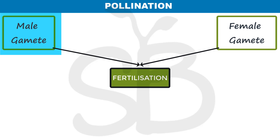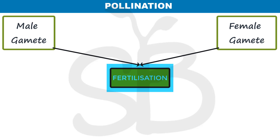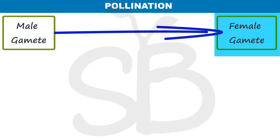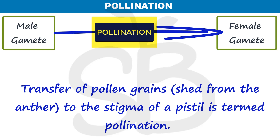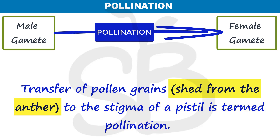The male gamete and female gamete are going to be fertilized. This process — that is the transfer of pollen grain shed from the anther to the stigma of a pistil — is termed pollination.